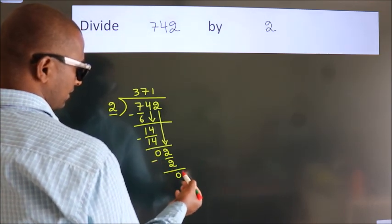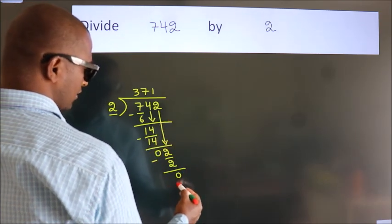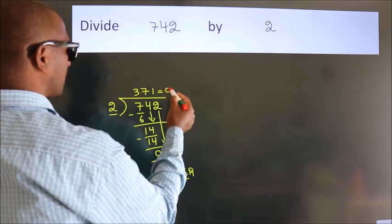After this, no more numbers to bring down. So we stop here. This is our remainder. This is our quotient.